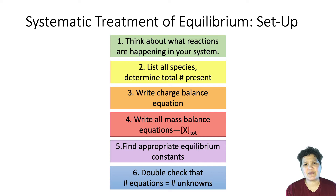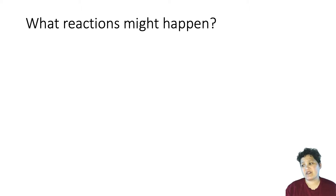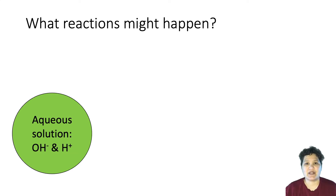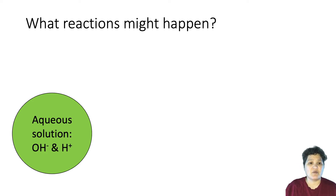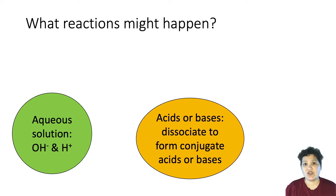Let's go through some of those steps more closely. First, what sort of reactions might happen? If you're dealing with an aqueous solution, one thing you always need to think about is the dissociation of water — basically water splitting to form H⁺ and OH⁻. That's especially important if you have acid or base reactions going on, since H⁺ and OH⁻ concentrations will be affected by both the dissociation of water and the dissociation of acid or ionization of base.